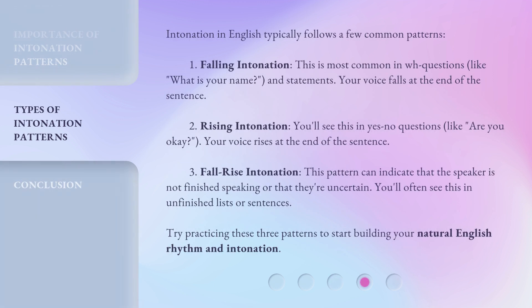Intonation in English typically follows a few common patterns. 1. Falling intonation: This is most common in WH questions, like 'What is your name?' and statements. Your voice falls at the end of the sentence. 2. Rising intonation: You'll see this in yes-no questions, like 'Are you okay?' Your voice rises at the end of the sentence. 3. Fall-rise intonation: This pattern can indicate that the speaker is not finished speaking, or that they're uncertain. You'll often see this in unfinished lists or sentences. Try practicing these three patterns to start building your natural English rhythm and intonation.